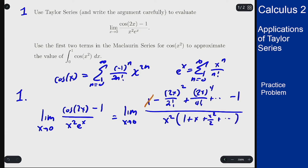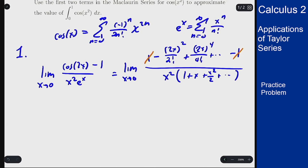Up in the numerator, the ones cancel, so what I'm left with is -4x²/2 plus 16x⁴/24 plus terms with higher powers of x.